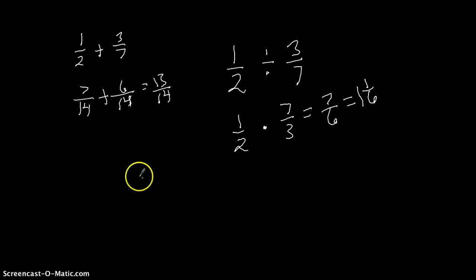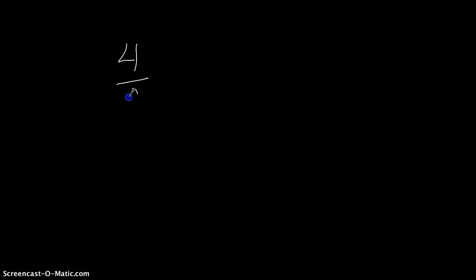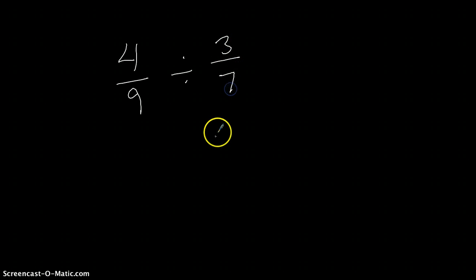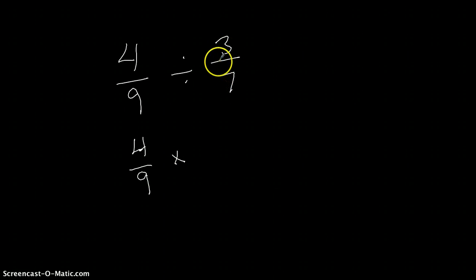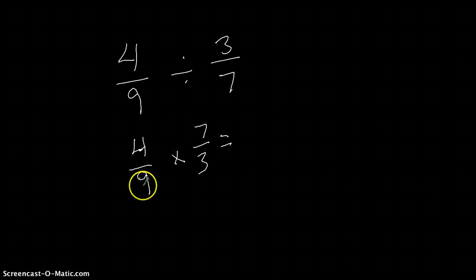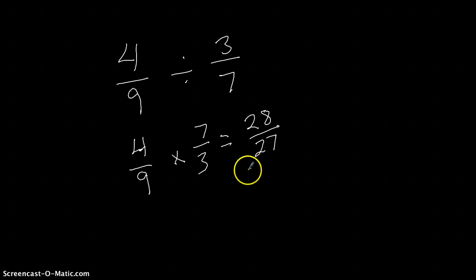Now we'll do another quick example. Let's say I've got four-ninths divided by three-sevenths. The first fraction stays the same. We get rid of the division symbol and replace it with a multiply — I'll put the standard x. Then we do the reciprocal of three-sevenths, so instead of three-sevenths I have seven-thirds. Multiplying numerator with numerator and denominator with denominator: four times seven is twenty-eight, nine times three is twenty-seven. Now I have an improper fraction.